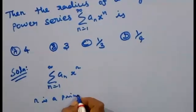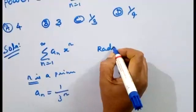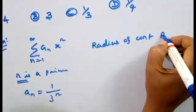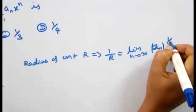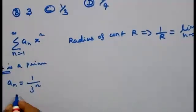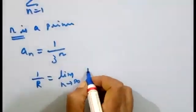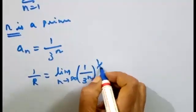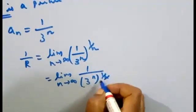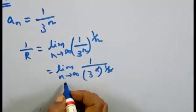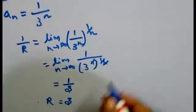Case 1: n is a prime number. When n is prime, a_n equals (1/3)^n. Radius of convergence: 1/R equals the limit as n tends to infinity of [(1/3)^n]^(1/n). This gives limit as n tends to infinity of 1/3. Since 1/3 is a constant term, the limit equals 1/3, so R equals 3.